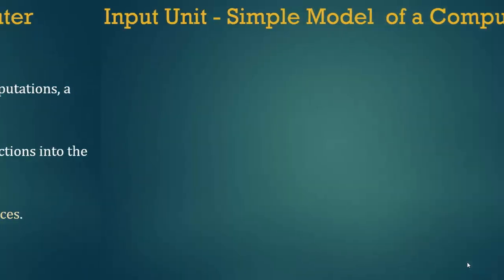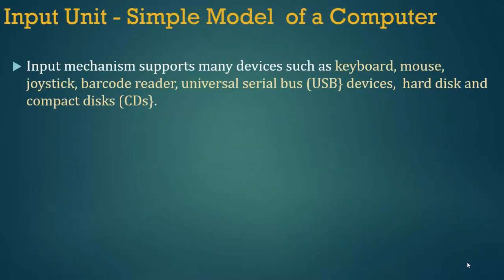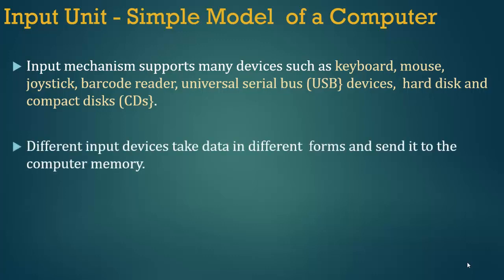The input mechanism supports many devices such as keyboard, mouse, joystick, barcode reader, universal serial bus (USB) devices, hard disk and compact disks. Different input devices take data in different forms and send it to the computer memory. Keyboard, mouse, joystick, barcode reader, USB devices, hard disk aur compact disk jaise kai upkaranon ka samarthan karta hai. Vibhinn input devices vibhinn rupon mein data lete hain aur ise computer memory mein bhejte hain.